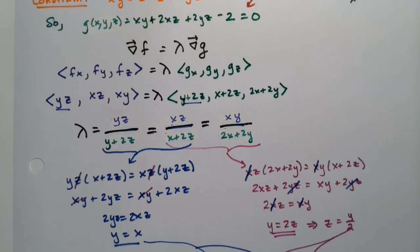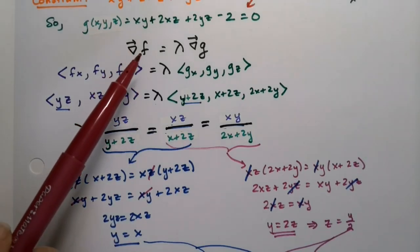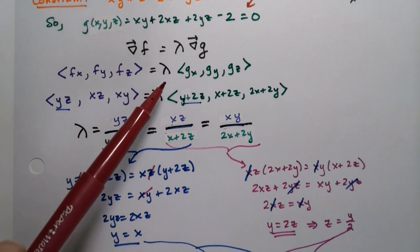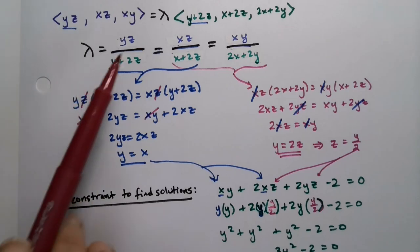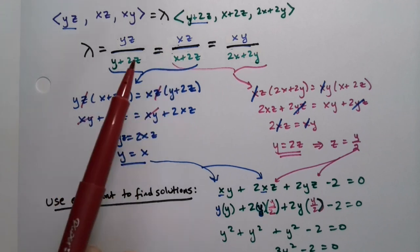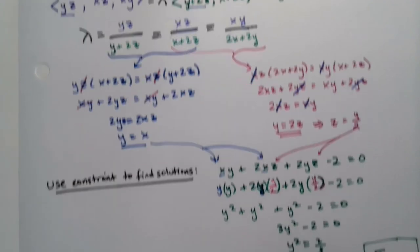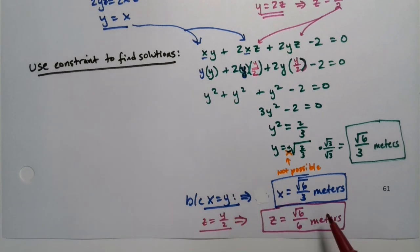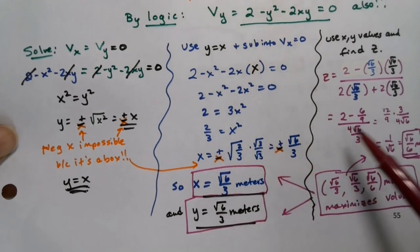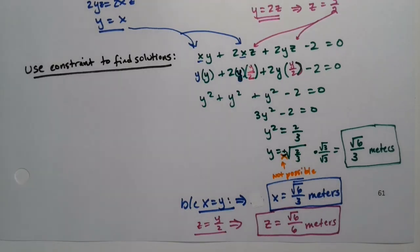So we take the gradient of f, the gradient of g, we have a lambda in between them. Then we solve for lambda to come up with patterns. And then we use those patterns, like two of them, and then another two, to find relationships between our variables. And then we use that in the constraint in order to find our solutions. I personally think it is easier than what we did before with all of this. But it's kind of six in one hand, half dozen in the other. It's a matter of personal preference. But it also works, as we are seeing here. It does, in fact, work and find the answers for us. In this case, the dimensions of the box that would have a maximum volume.